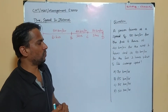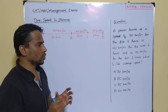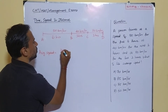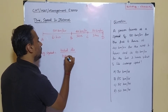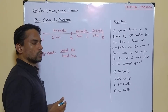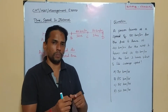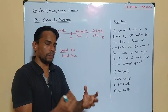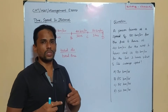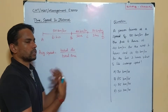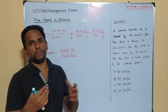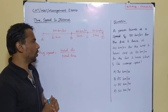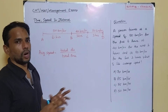Now we are supposed to find what is the average speed. By definition, average speed is total distance divided by total time taken. I will first show you how to work out this problem through the conventional way, and then later I'll reveal a brilliant shortcut.